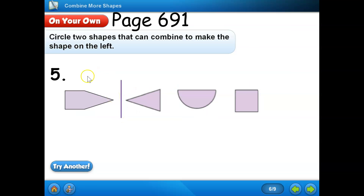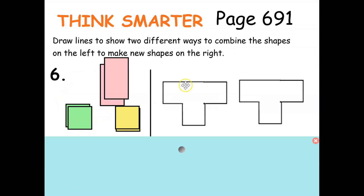Boys and girls, you will try to do number five on your own. Which two shapes can be combined to make the shape on the left? Think Smarter, page 691. Draw lines to show two different ways to combine the shapes on the left to make new shapes on the right. For these problems, you need to be able to use your mind to switch these shapes around so that you can show two different ways to make the new shapes.